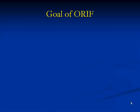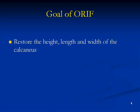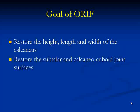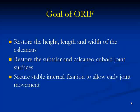The goals of open reduction and internal fixation are to restore the height, length, and width of the calcaneus — that is, to restore its normal shape — and to restore the subtalar and calcaneocuboid joints. Stable internal fixation is secured to allow early mobilization and early joint movement.